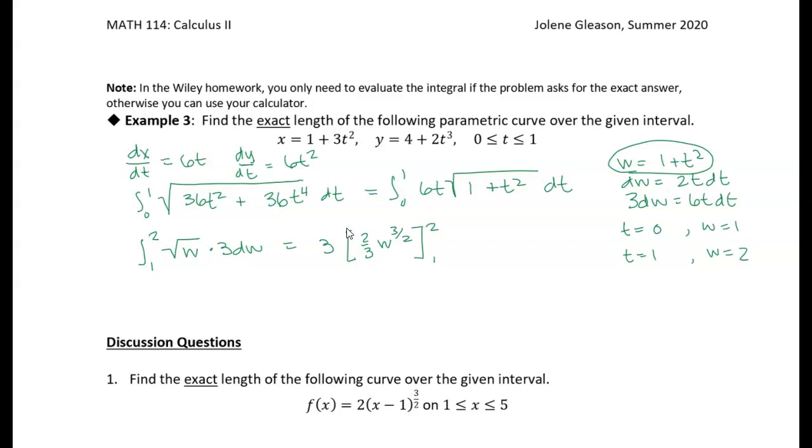All right, well, so if I pull the 2/3 out, and I take 2/3 times 3, what I end up with is 2. And then I'm going to evaluate w to the 3 halves at 2. So I get 2 to the 3 halves. And then minus 1 to the 3 halves.